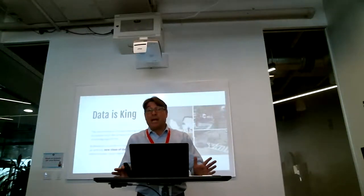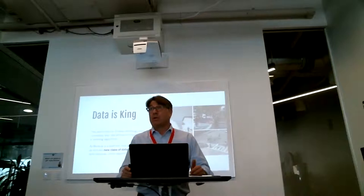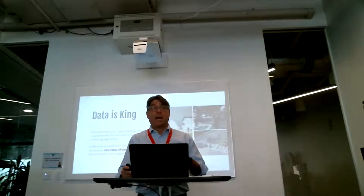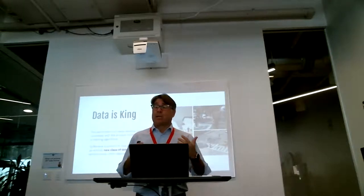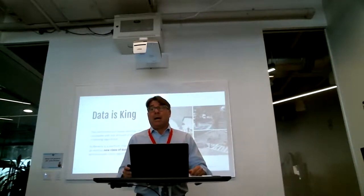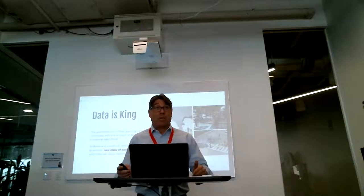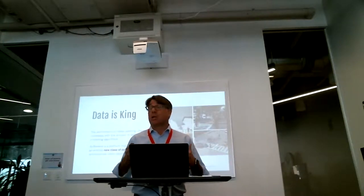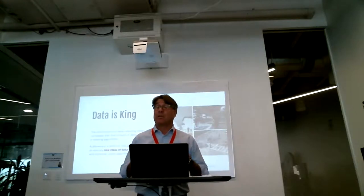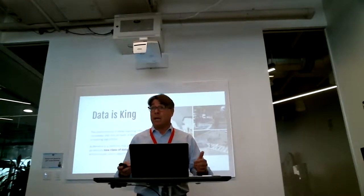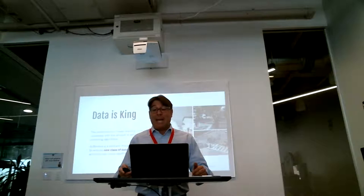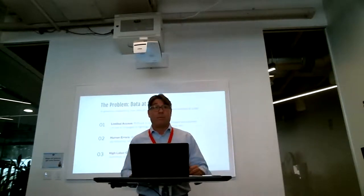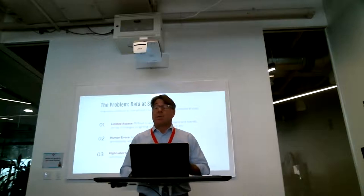Our view is data is king in the world of AI. You need a lot of data to train an algorithm. If you want to train an algorithm to understand a cup, you probably need a million pictures. And if you want to understand where that cup sits in relation to the table or different lighting conditions, you're going to need a lot more. The problem with data today is that you have to get real data from the real world, which is sometimes very hard to get.